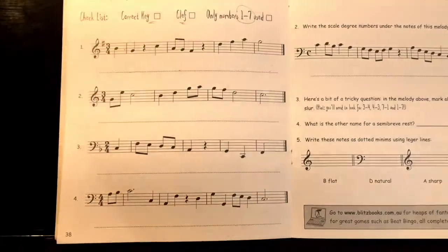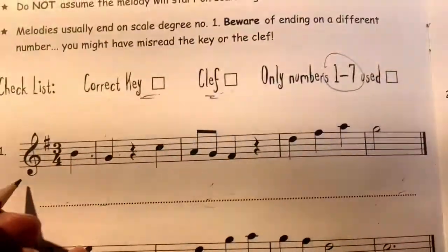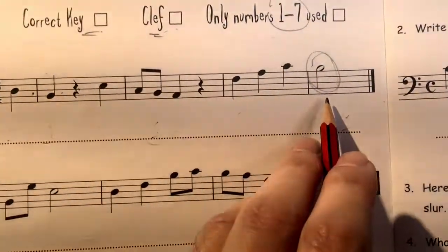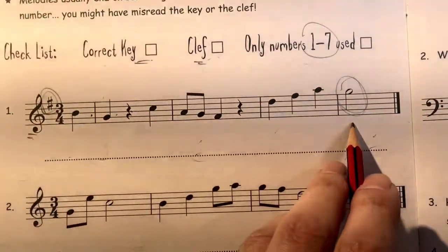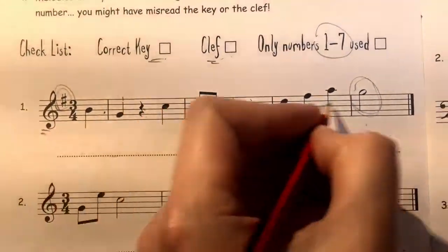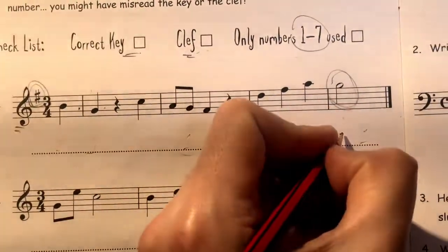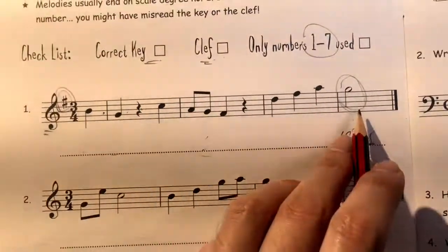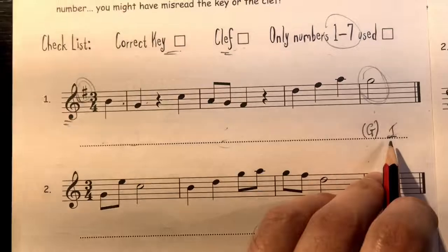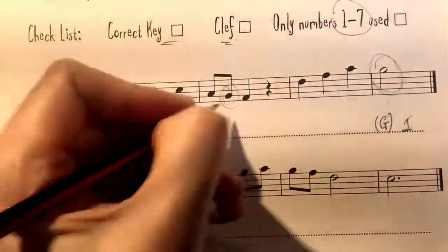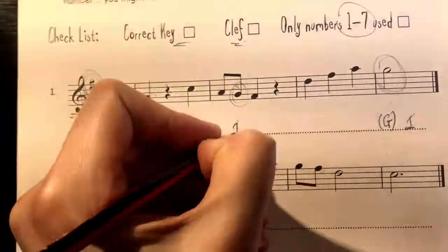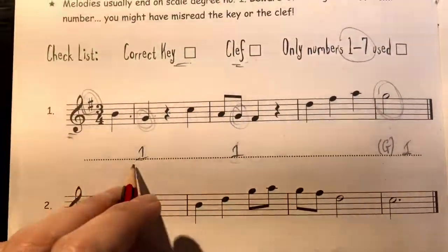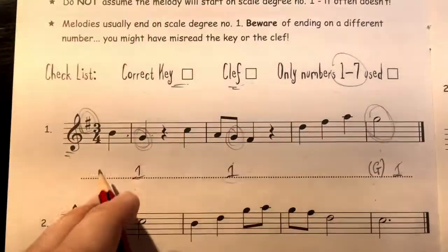I'll help you with the first melody, then you work out the other three. Check your clef, then look at your key signature, then look at the final note — this usually tells you number one, the tonic of the scale. In the treble clef, this note is number one in G major. Find all the G's and mark them as number one. We have a G an octave below — mark that as number one. There's another G an octave below — mark that as number one too.